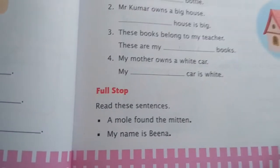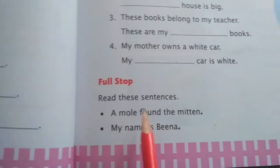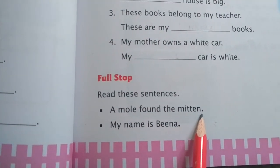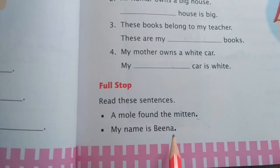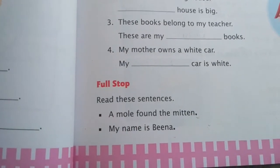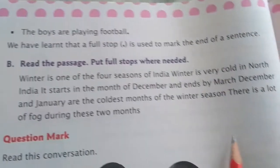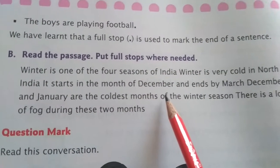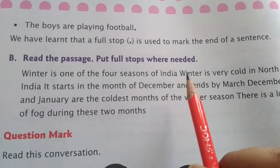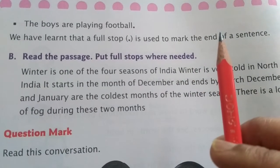Next, full stop. A full stop is used to end any sentence. For example: A mole found the button — sentence ended, so we put a full stop. My name is Bina — after Bina we put a full stop because the sentence has ended. In Part B, there is a passage given with no full stops used. You have to identify where each sentence ends and insert a full stop at the end of each sentence throughout the passage.